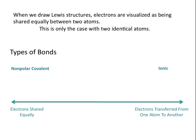In a non-polar covalent bond, that's where you have electrons shared equally. But there's also such a thing as a polar covalent bond, and this is where you have electrons shared unequally.